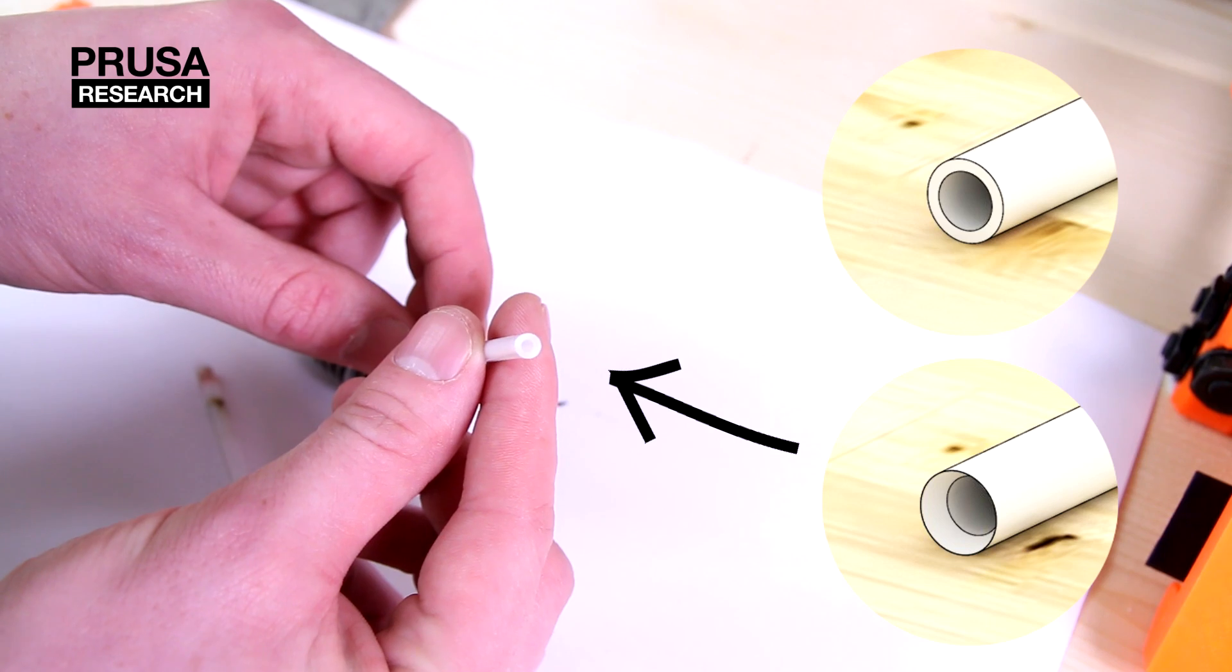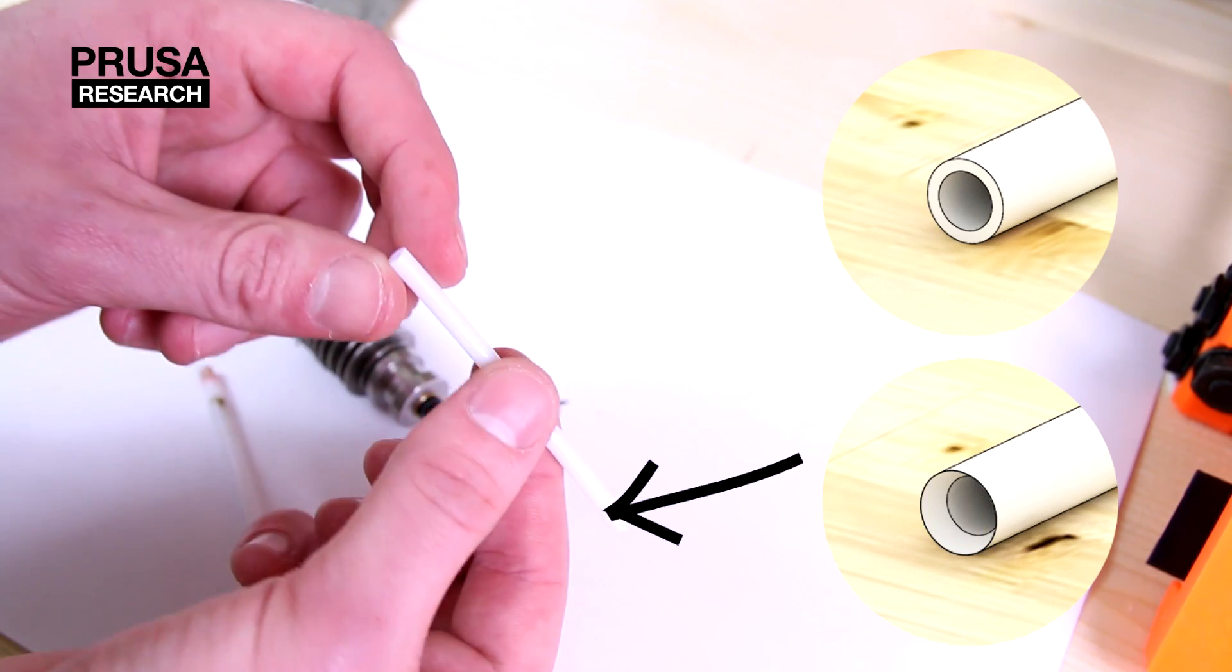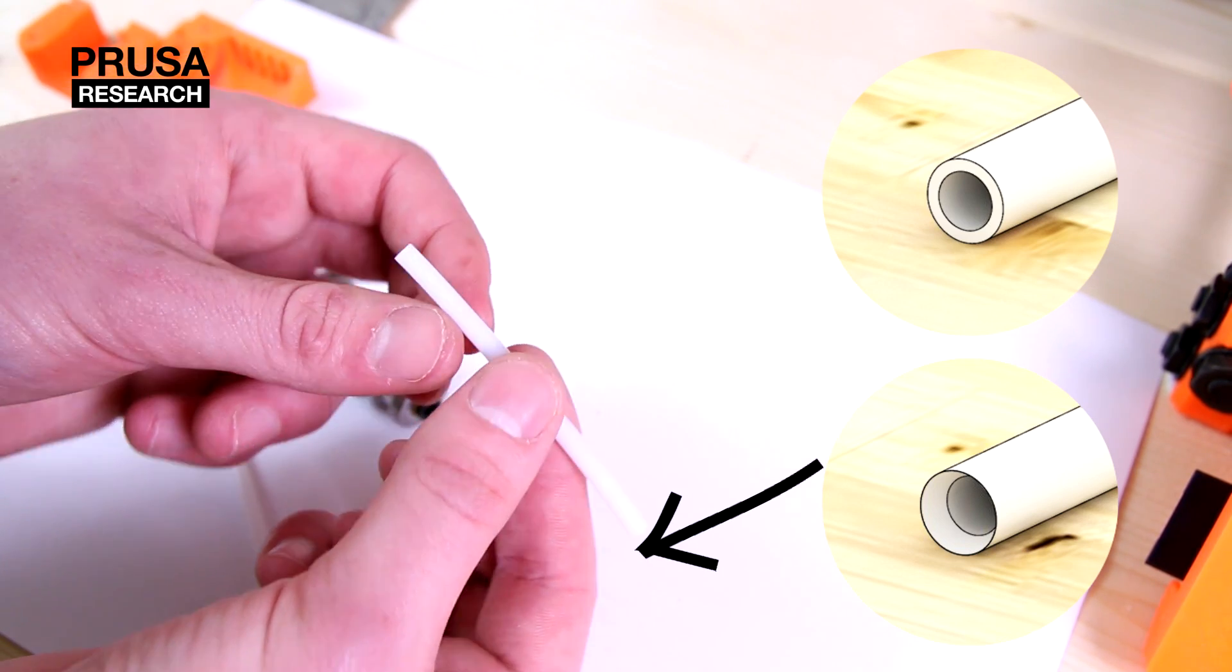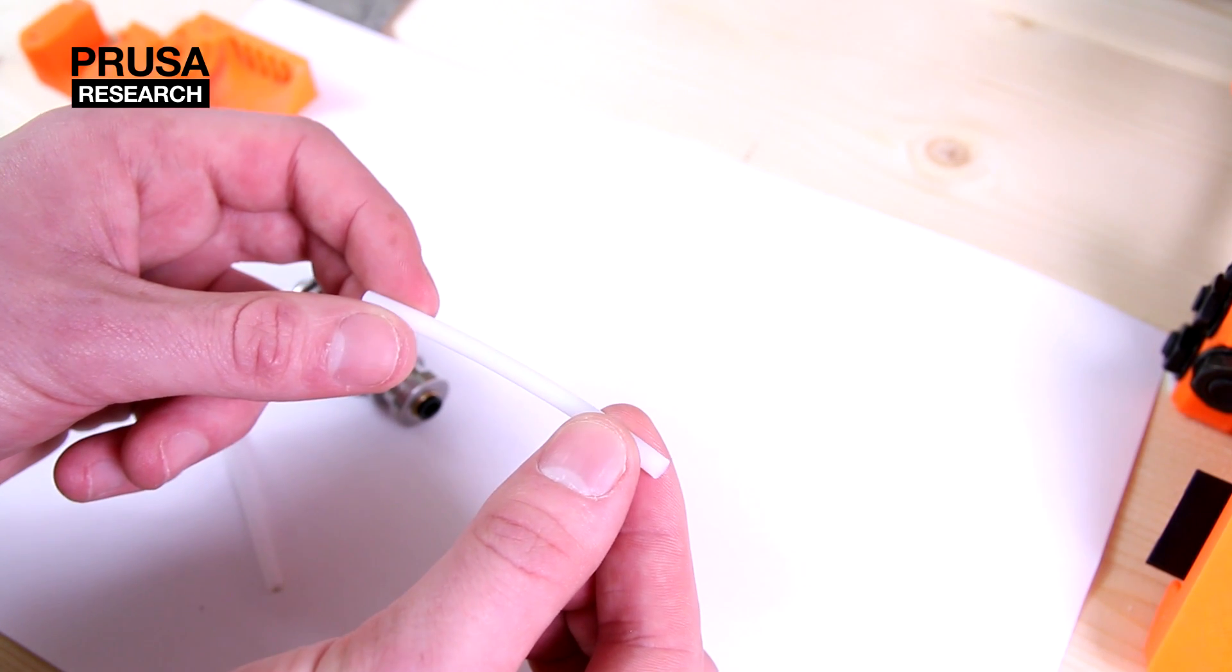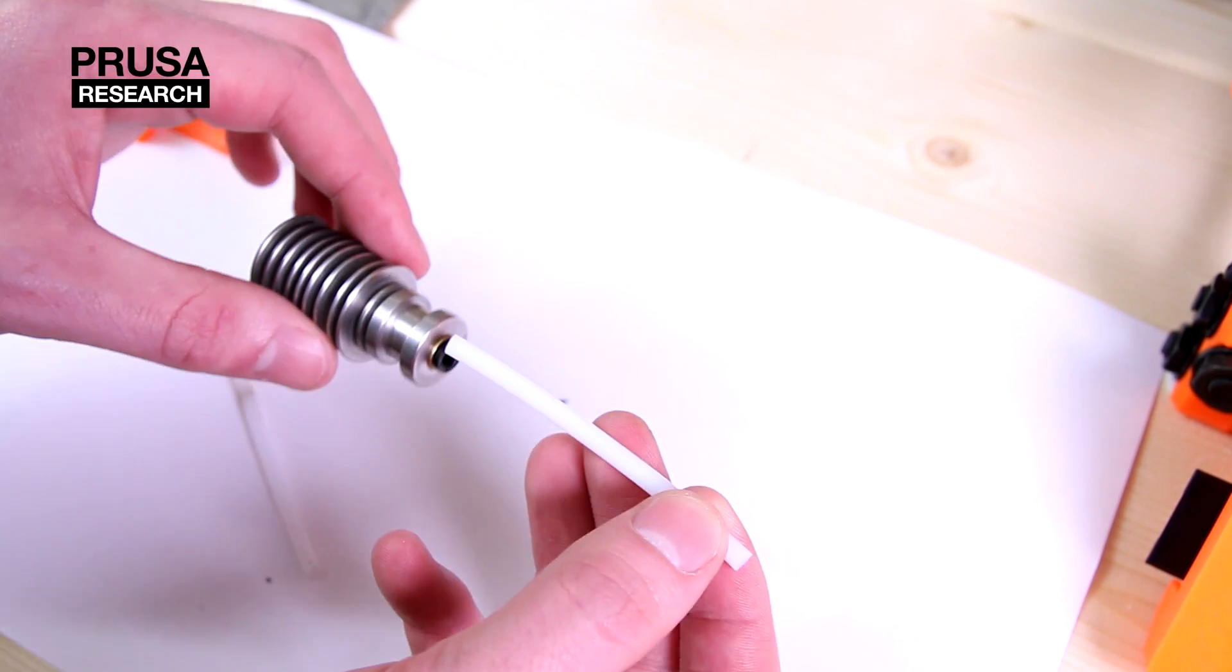For better inserting a filament, one of the ends of the Teflon tube is enlarged. This end has to be at the print head entrance after the assembly, so insert it by the other end.